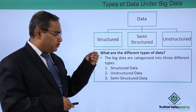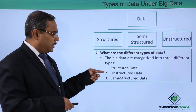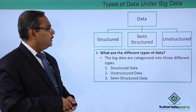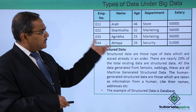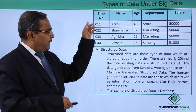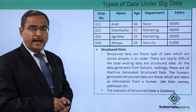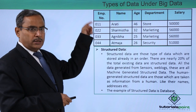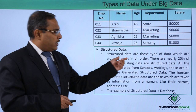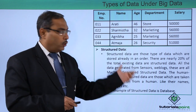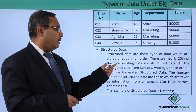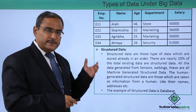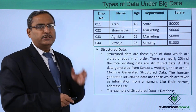Big data is categorized into three different types: structured data, unstructured data, and semi-structured data. Looking at this database, it is a good example of structured data — we have columns for employee number, name, age, department, and salary, with respective rows containing the records. Structured data are those stored already in an order, and there are nearly 20 percent of the total existing data nowadays that are structured. All data generated from sensors, web logs, and machines are machine-generated structured data.